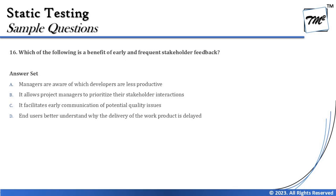Option C says 'it facilitates early communication of potential quality issues,' which pretty much makes sense in relation to what early and frequent feedback is for. Option D says 'end users better understand why the delivery of the work product is delayed' — it's not specifically about delays. Early and frequent feedback is not to explain why a project is delayed; it's about acknowledging what has been implemented and whether it aligns with the business requirement.